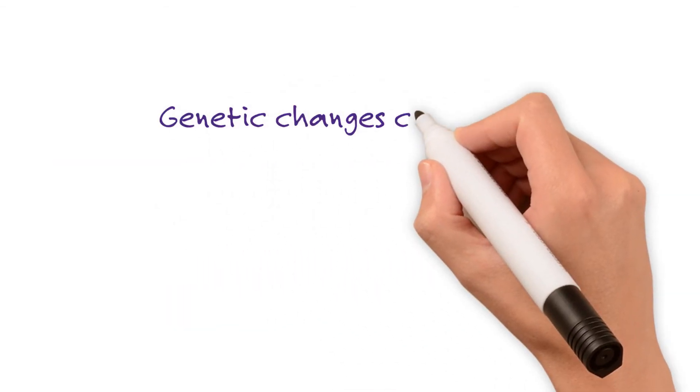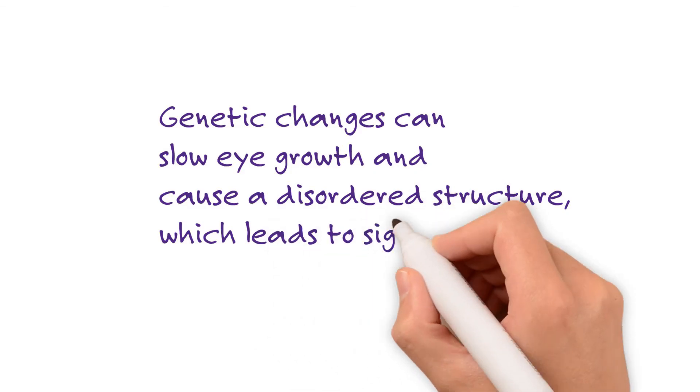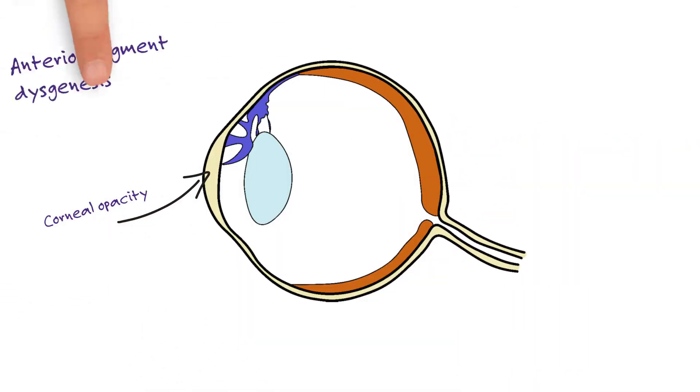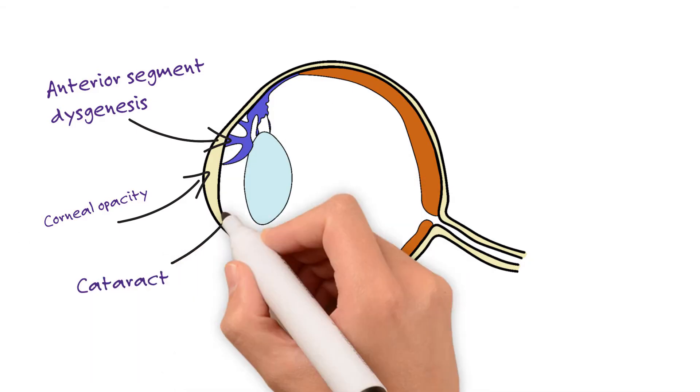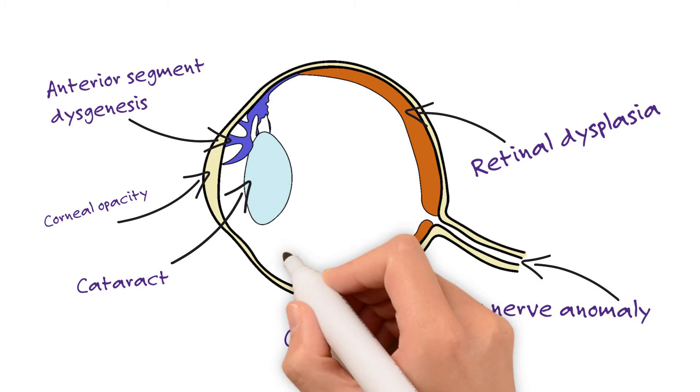Genetic changes can slow eye growth and cause a disordered structure which leads to sight loss, including corneal opacity, anterior segment dysgenesis, cataract, retinal dysplasia, optic nerve anomaly and coloboma.